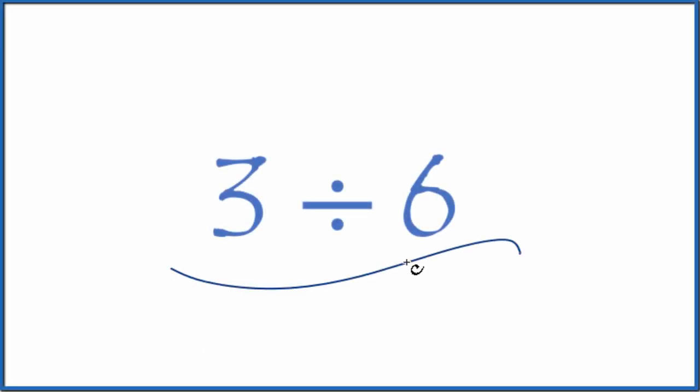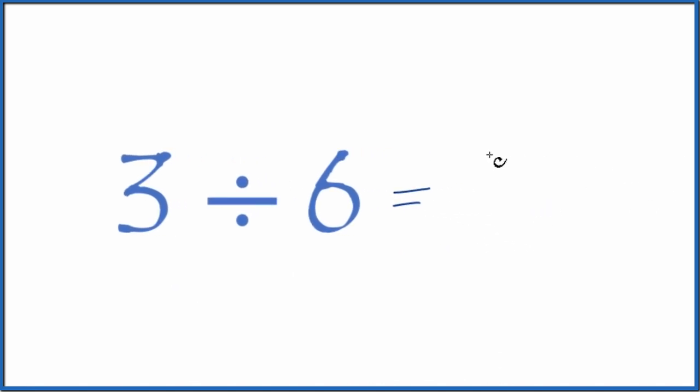Let's take a look at 3 divided by 6. There's a few ways to think about this. First off, let's consider this as a fraction. We have 3 over 6, so that's the same as 3 divided by 6.